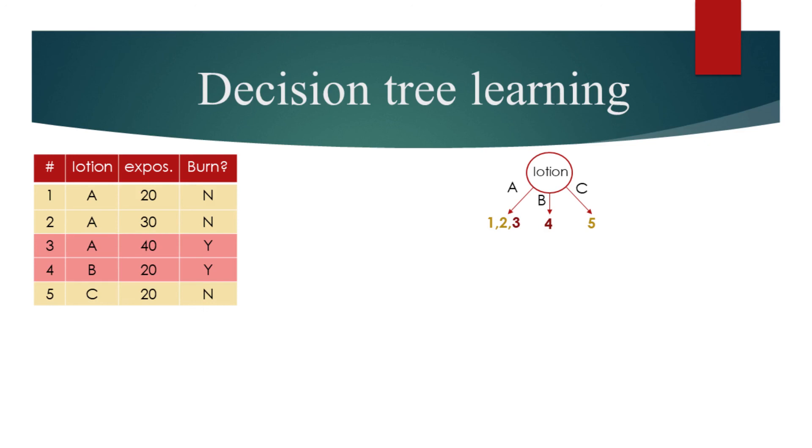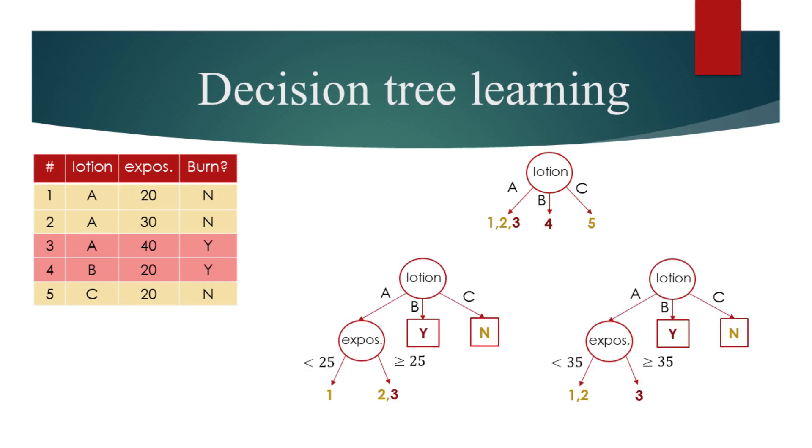We have the most amount of total impurity at the left leaf. We should be able to guess that there is no point in separating the left node based on the lotion again. We are left with two possible binary splits based on exposure. Comparing the splits at 25 and 35 minutes, we see that split at 35 minutes gives us the least amount of impurity.